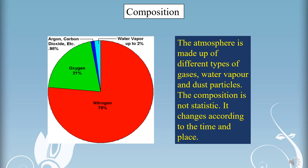The atmosphere is a mixture of different types of gases, including water vapour and dust particles. Nitrogen and Oxygen are the two main gases of the atmosphere. About 99% of it is made up of these two gases. Other gases like argon, carbon dioxide, etc., form the remaining part of the atmosphere.